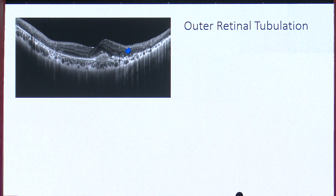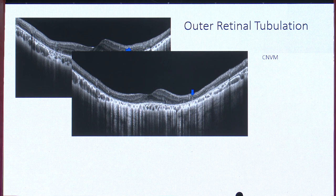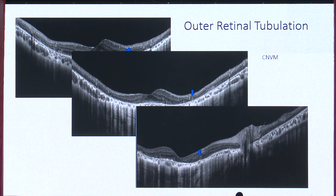Outer retinal tubulations are hyporeflective spaces lined by hyperreflective ELM, mostly described in AMD cases and are a sign of poor visual prognosis, indicating that the photoreceptor layer is lost with degenerating RPE present. They have also been described in other retinal dystrophies and choroideremia — for example, the lower image here is from a Bietti's crystalline dystrophy case.